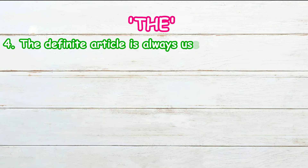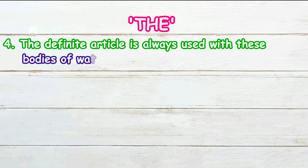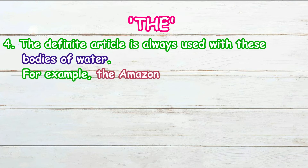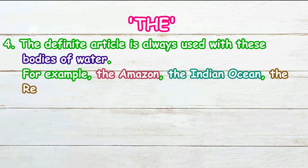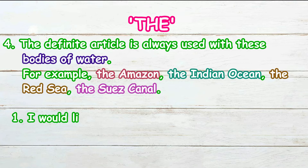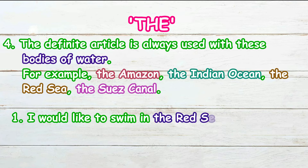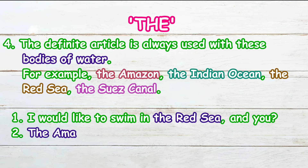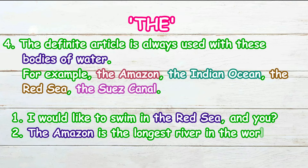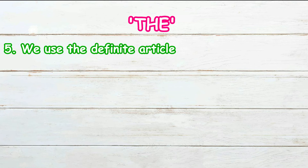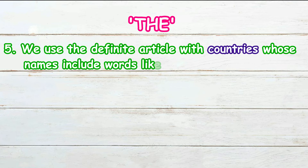The definite article is always used with bodies of water. For example: the Amazon, the Indian Ocean, the Red Sea, the Suez Canal. For example: 'I would like to swim in the Red Sea,' or 'The Amazon is the longest river in the world.'